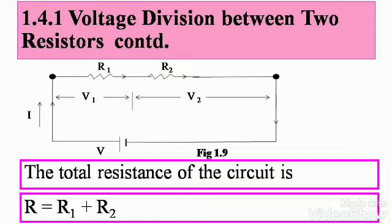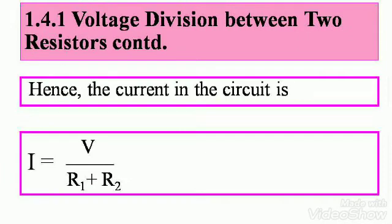The total resistance of the circuit is, again series circuit, R equals R1 plus R2. Hence, the current in the circuit is, by Ohm's law, I equals V by R. So here R is R1 plus R2. Therefore, I equals V divided by R1 plus R2.